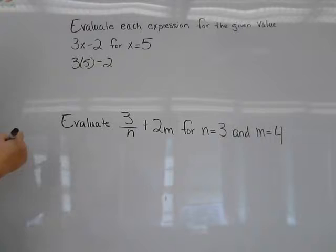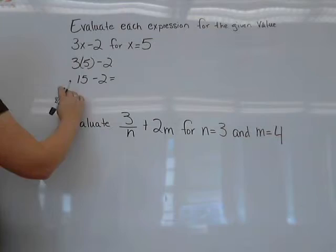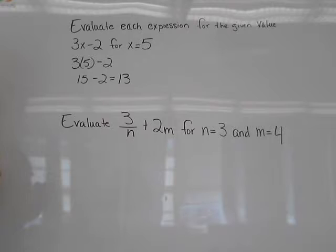Then with the order of operations, I know I'm going to multiply first, and then I get 15 minus 2. 15 minus 2 is 13.